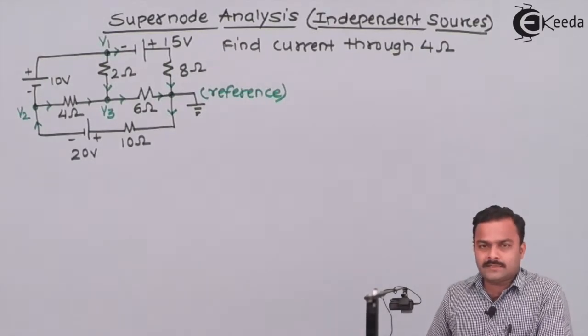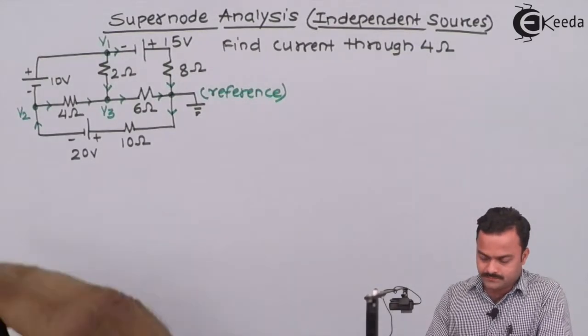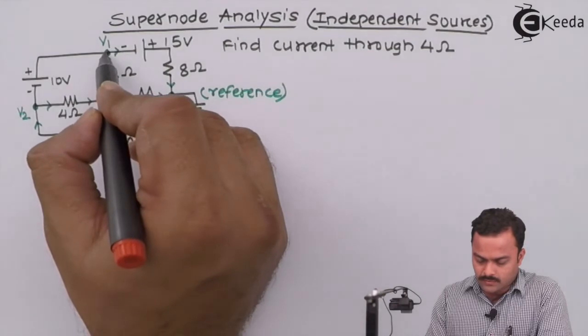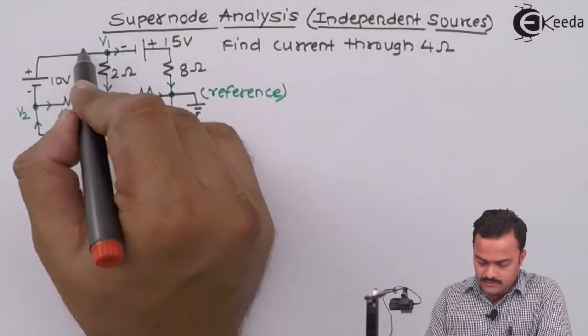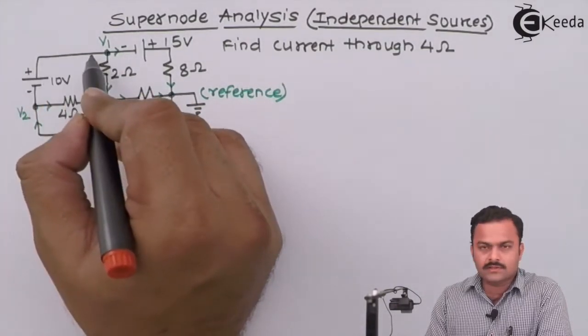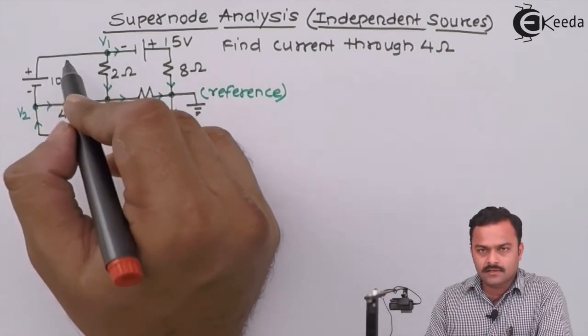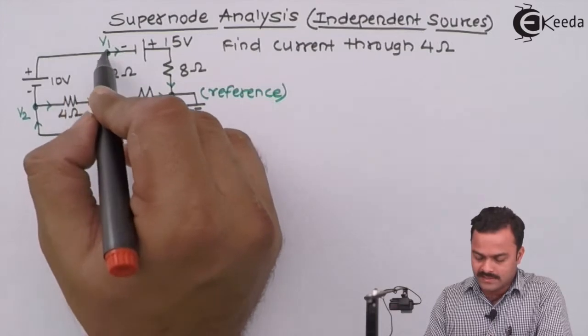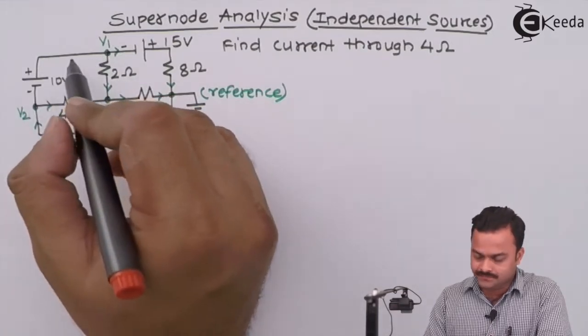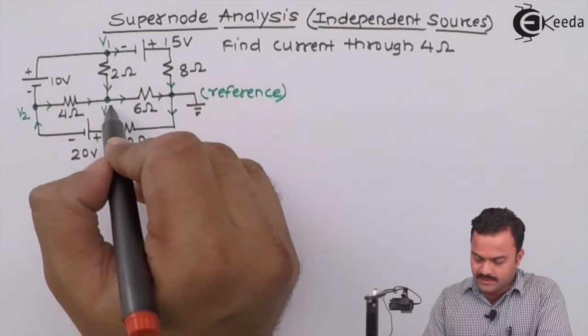Now let's apply KCL equations to all the nodes. The problem with node 1 and node 2 is that only a voltage source is present between them, no resistor. Hence we cannot apply KCL individually. Let's go to node 3 directly then.